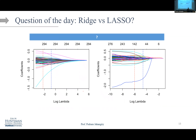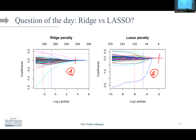Which path is ridge and which is lasso? Looking at the lambda paths: in plot A the coefficients shrink towards zero but never reach zero — that's ridge. In plot B, coefficients go exactly to zero — that's LASSO. The left one is ridge, the right one is lasso.